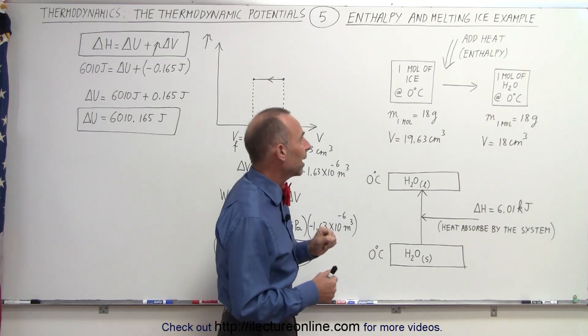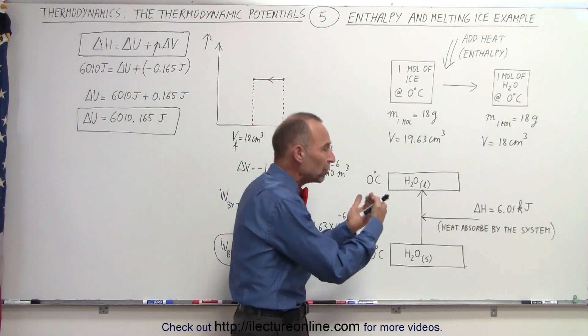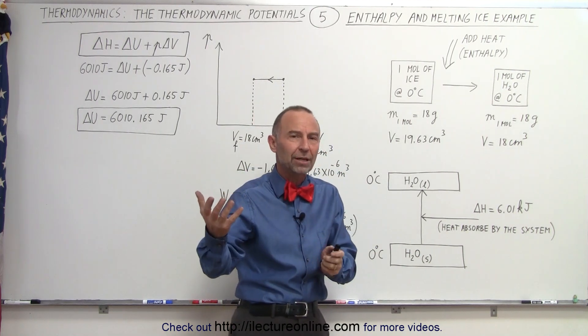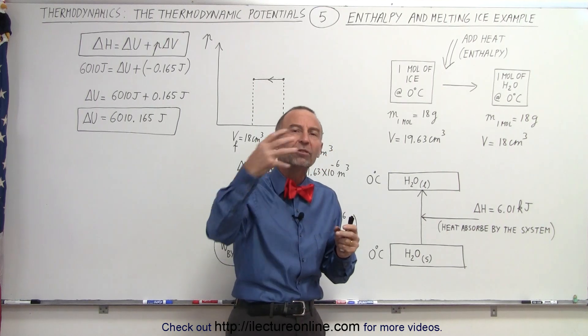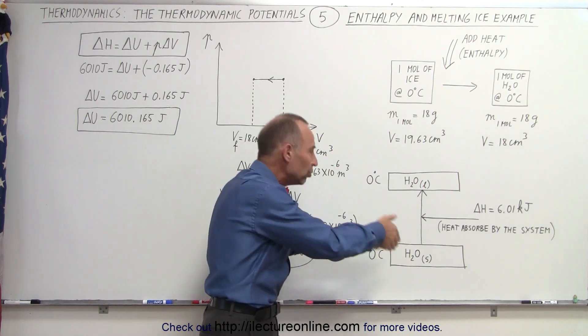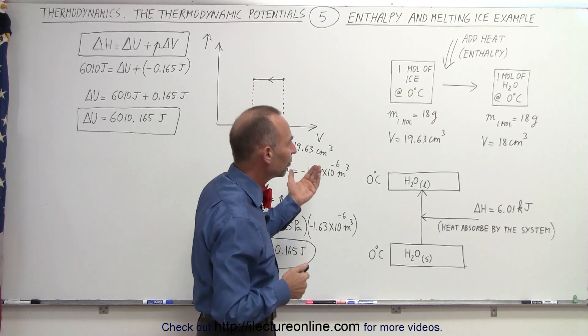Let's say the ice is at zero degrees centigrade. Now we add heat to the ice, we're actually causing a change in enthalpy. We're adding heat, so there's positive enthalpy.